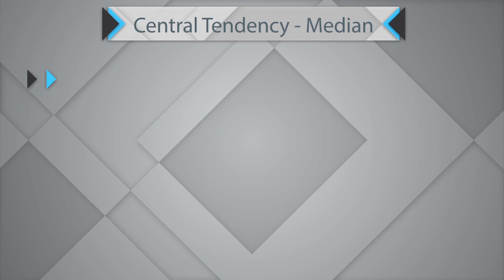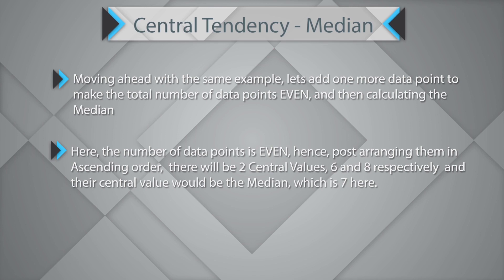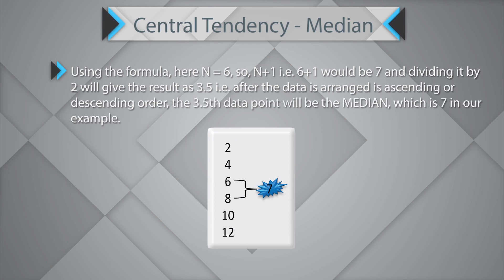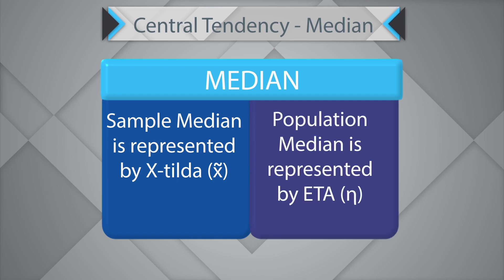For an even number of data points, if we add one more data point to make the total six, there will be two central values. In this case, 6 and 8, and their average becomes the median, which is 7. Using the formula, n equals 6, so n plus 1 is 7, divided by 2 gives 3.5 — meaning the 3.5th data point is the median, hence 7 is the median. Sample median is represented by x-tilde, while the population median is represented by the eta value.